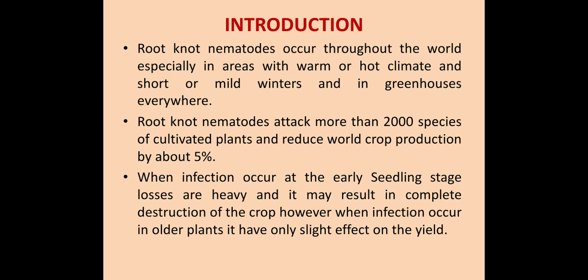In individual fields, however, the loss may be much higher. In India, Das Gupta studied root knot nematodes in the Delhi region and estimated that about 60% loss of vegetable crops occurs due to these root knot nematodes. When infections occur at the early seedling stages, losses are heavy and may result in complete destruction of the crop. However, when infections occur in older plants, they have only slight effect on the yield.